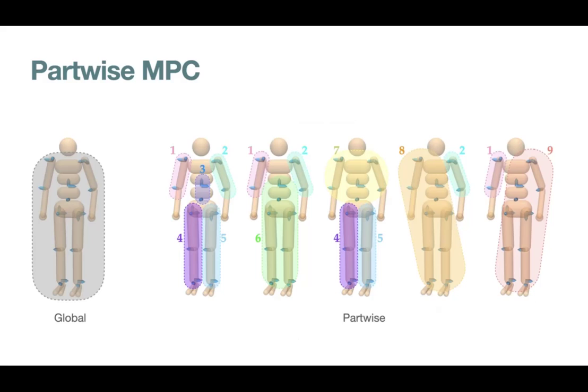For example, in the rightmost partitioning, the character could be sitting down and waving with the right arm, without moving any other part of the body.